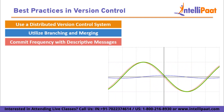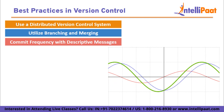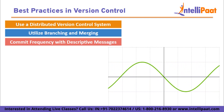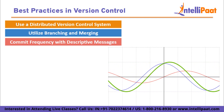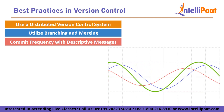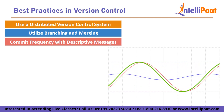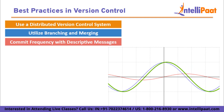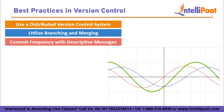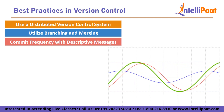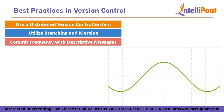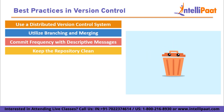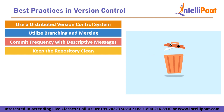Commit frequently with descriptive messages: commits should be made frequently with clear, concise, and meaningful messages. Each commit should represent a logical change or a set of related changes. This practice aids in understanding the project history and makes it easier to revert to or cherry-pick specific commits if needed. Keep the repository clean: avoid committing unnecessary files such as build artifacts, temporary files, or editor-specific settings.